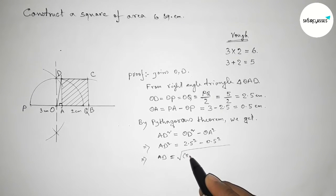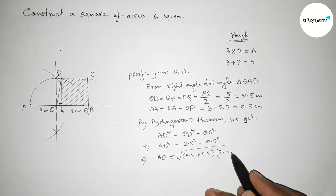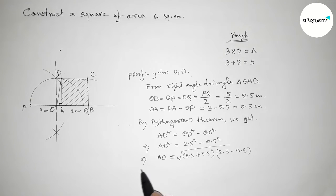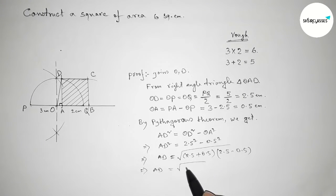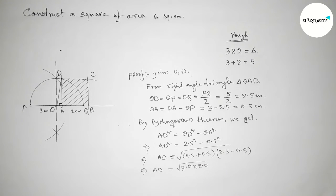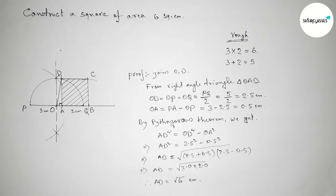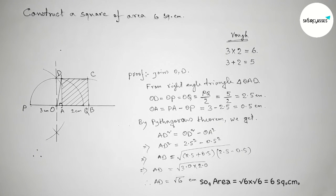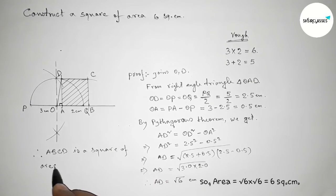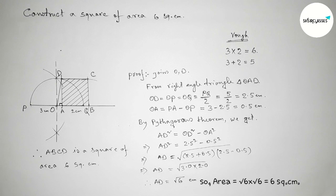Applying the formula a² minus b² equals (a+b)(a-b): AD equals root of (2.5+0.5)(2.5-0.5) equals root of 3.0 into 2.0, which gives AD equals root 6 centimeters. Therefore area equals root 6 times root 6 equals 6 square centimeters. Therefore ABCD is a square of area 6 square centimeters. That's all, thanks for watching.